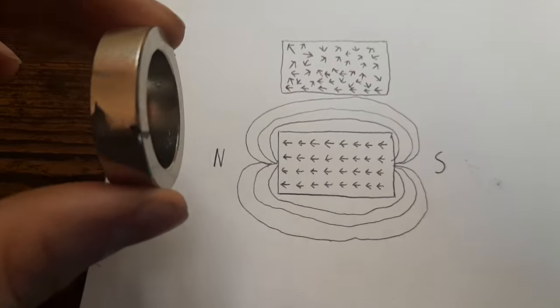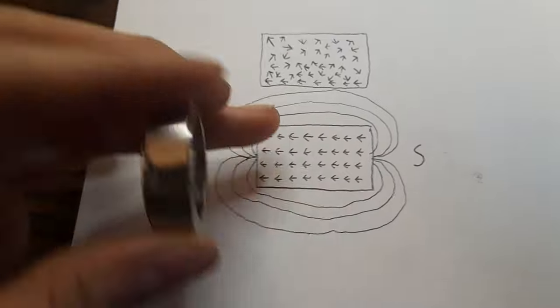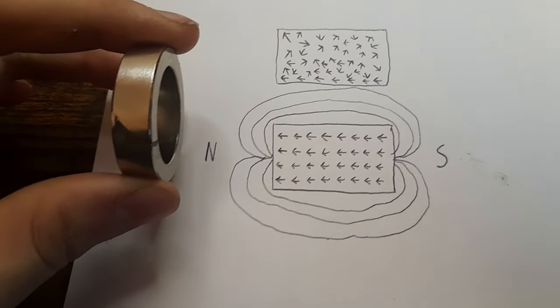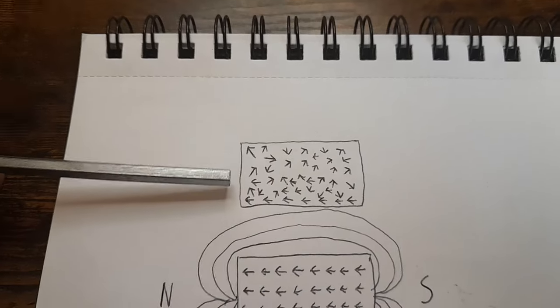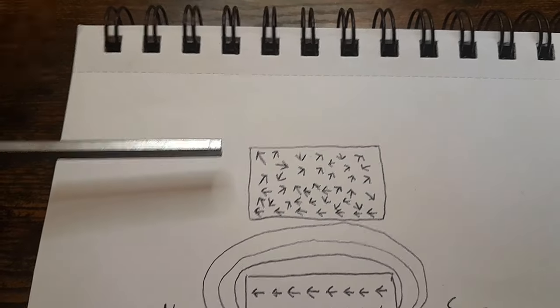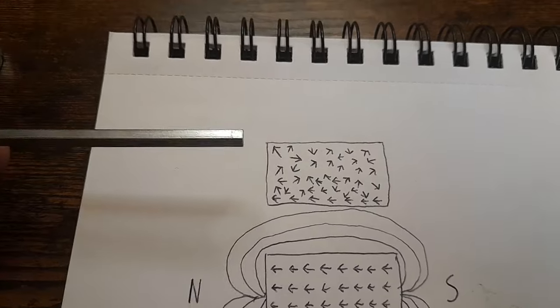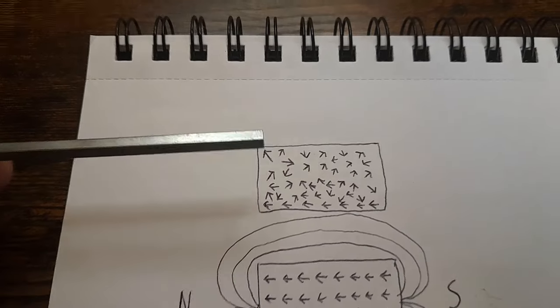You see, in the permanent magnet all the atomic orbitals are aligned in the same direction, which creates a strong magnetic field. Now in the Allen wrench, the orbitals are pointing in random directions, which sort of cancels out the magnetic field throughout the entire thing.